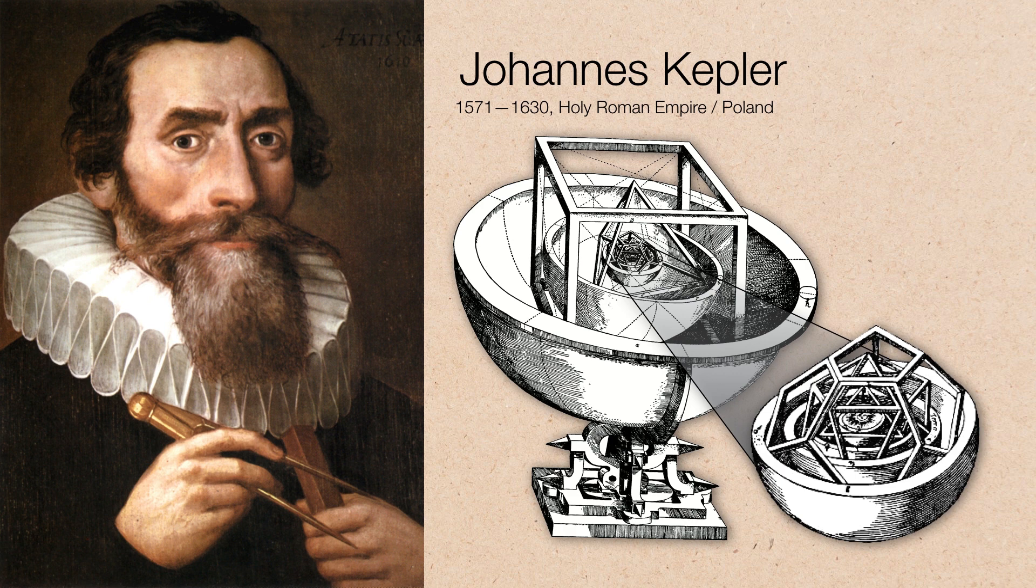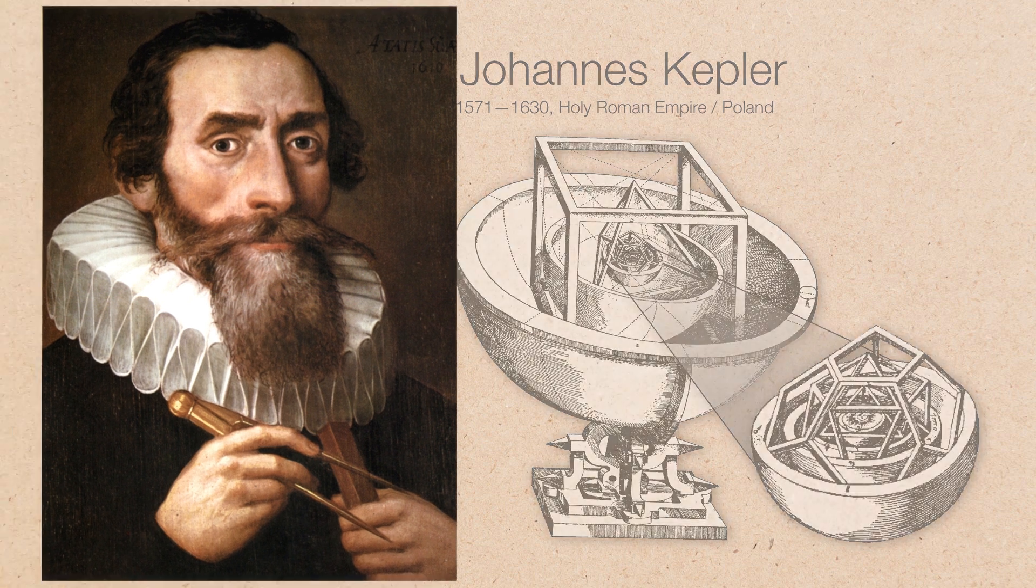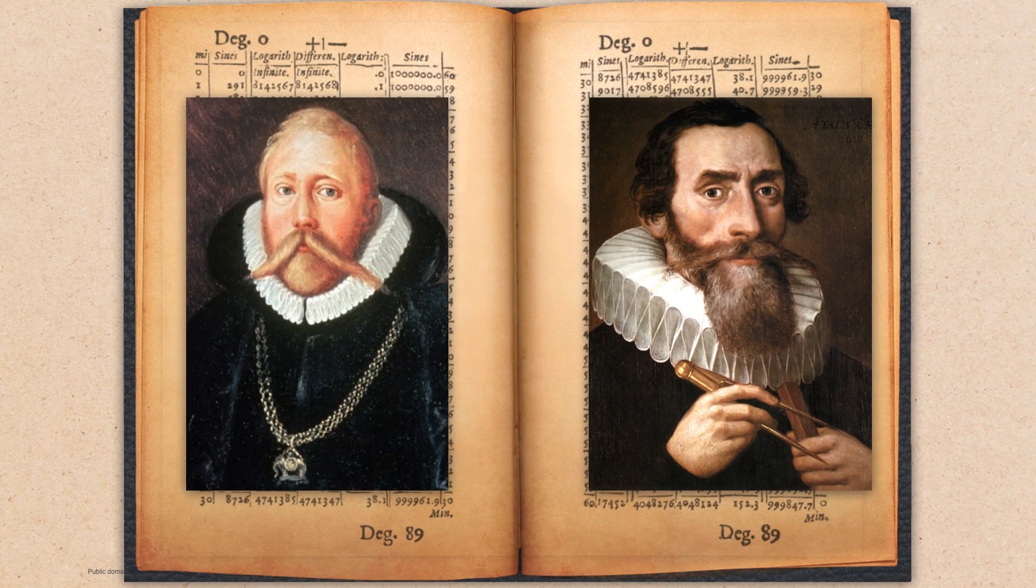Now, he didn't seriously believe that there were geometric objects in space, but rather the arrangement of these geometric objects would reveal the locations of the planet's orbits. But lacking the data, he had no way to test this until Tycho Brahe came calling.